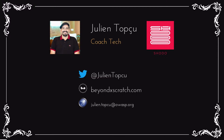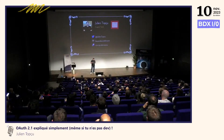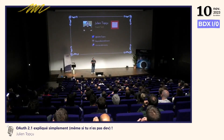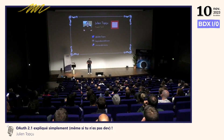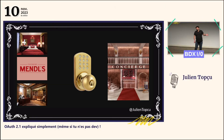Peut-être que certains d'entre vous ont vu le film de Wes Anderson. Au sein du Grand Budapest Hôtel, je joue le rôle du responsable de la sécurité et je vous ai sélectionné quelques moments forts qui illustrent très bien les grands principes de OAuth 2.1. Comme vous l'avez vu dans le générique, nous avons eu deux convives qui se sont tapés dessus. C'est dû à un problème qui entache malheureusement la réputation du palace : un problème de squatteur.